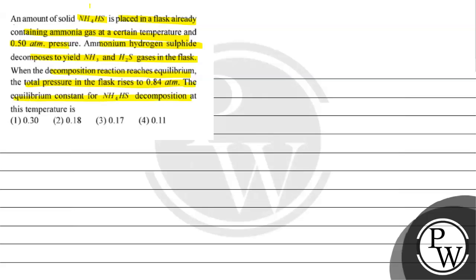The equilibrium constant for NH4HS decomposition at this temperature is: option 1 is 0.30, option 2 is 0.18, option 3 is 0.17, option 4 is 0.11.